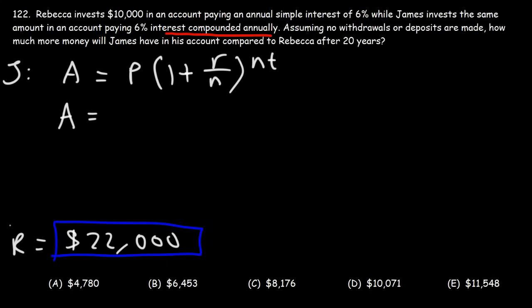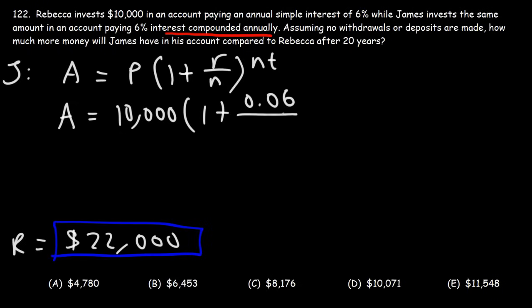A is going to equal the final amount in his account — that is, the principal plus interest combined. His principal is the same as Rebecca's, which is $10,000. He's receiving the same interest rate of 6%. It's compounded annually, which means he gets paid interest once per year, so N is 1 and T is 20.